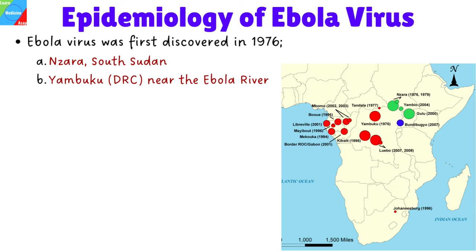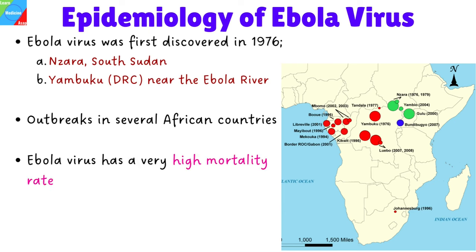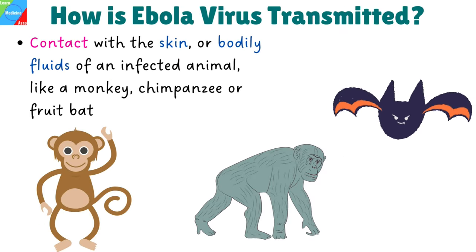Now let's look at the epidemiology of Ebola virus. Ebola virus was first discovered in 1976 in two simultaneous outbreaks, one in what is now Nzara, South Sudan, and the other in Yambuku in the Democratic Republic of Congo near the Ebola River, from which the disease takes its name. Since then, the virus has been infecting people from time to time, leading to outbreaks in several African countries. Ebola virus has a very high mortality rate. The case fatality rate is between 20% and 90% depending on the virus species, and the Zaire Ebola virus species has the highest mortality rate, ranging from 60% to 90%.